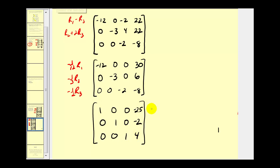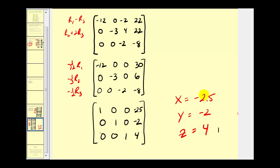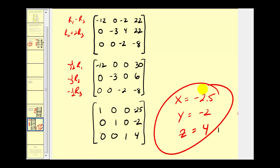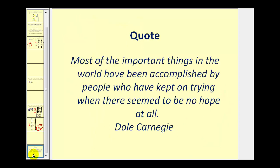Let's translate this back to equations. The first row gives x equals negative two point five. The second row gives y equals negative two, and the third row gives z equals positive four. We have now obtained the solution using reduced row echelon form. The next video will show how you can use your graphing calculator to check your work. Thank you for watching.